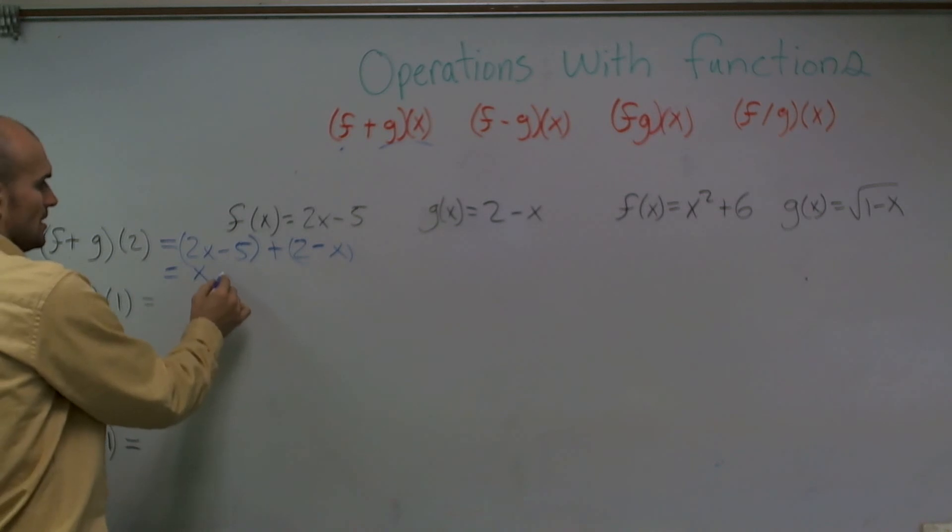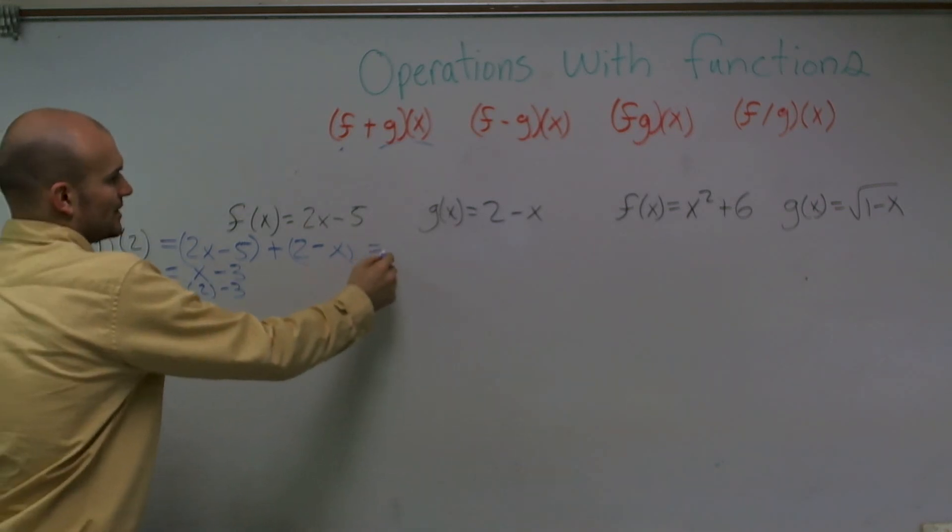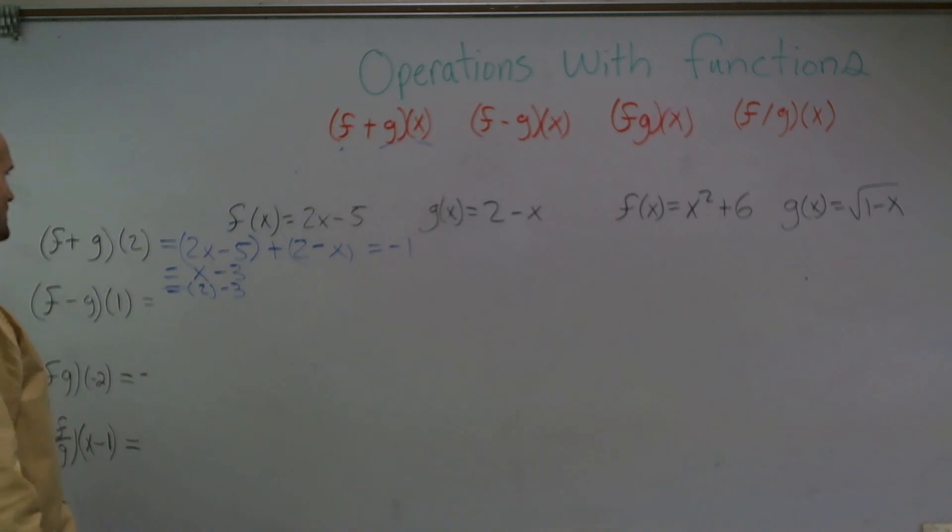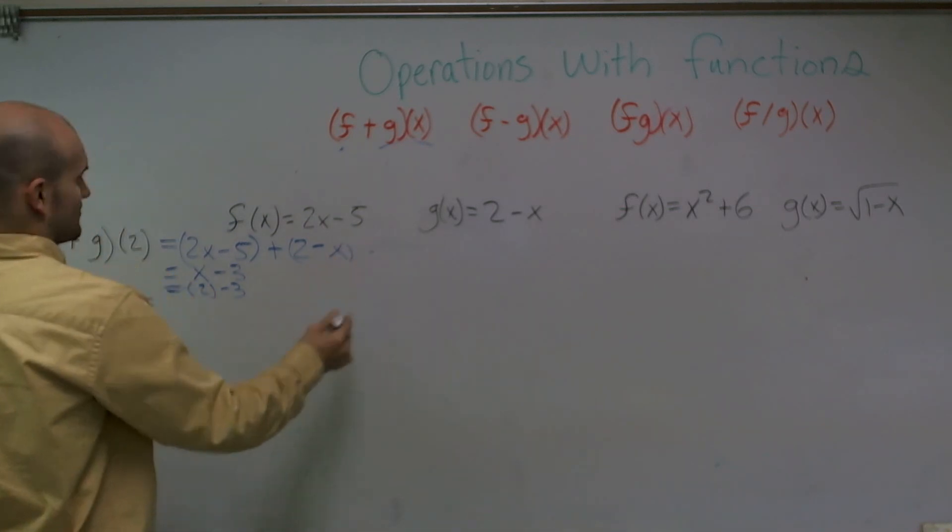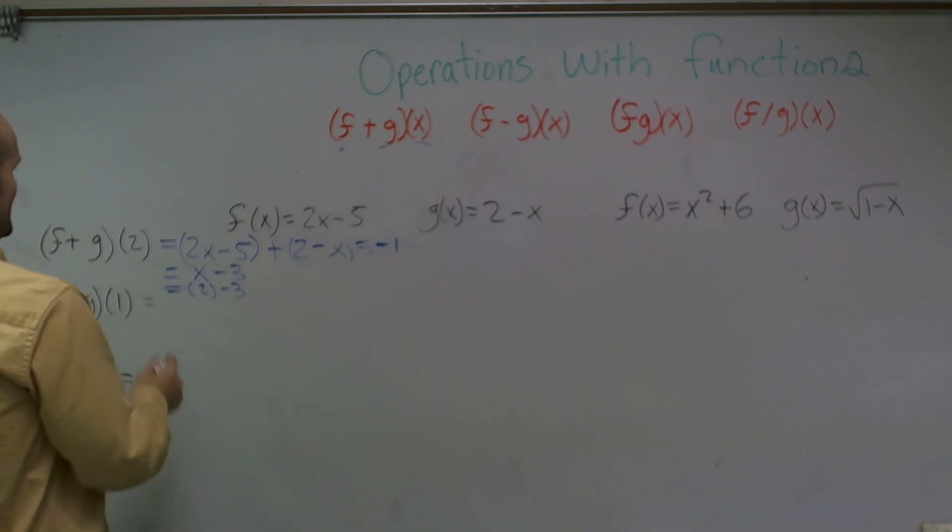so I get x minus 3. Then I need to evaluate it for 2, so I plug in a 2 minus 3. And therefore, my final answer, I'll just put over here, equals a negative 1. So therefore, I can write, so I can say f, I didn't really leave myself much space. So I can say f plus g of 2 equals negative 1. There we go, that's a little better.